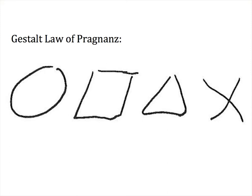In German, prägnanz means 'good figure.' Basically, this law states that we tend to perceive objects in their most perfect form. So we saw these slanted figures, but when asked to reproduce them, we drew the most ideal versions we could manage: a circle, a square, a triangle — probably an equilateral triangle — and an X.